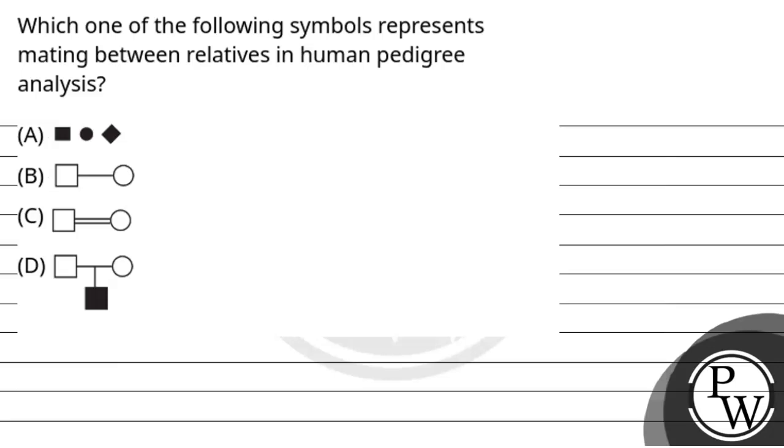Hello guys, let's read the question. The question says which one of the following symbols represents the meeting between relatives in the human pedigree analysis.